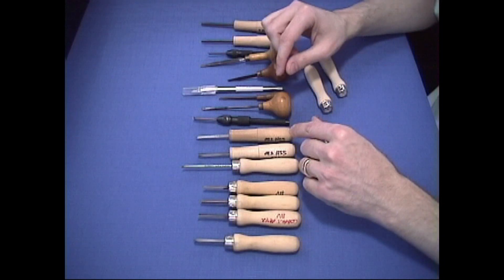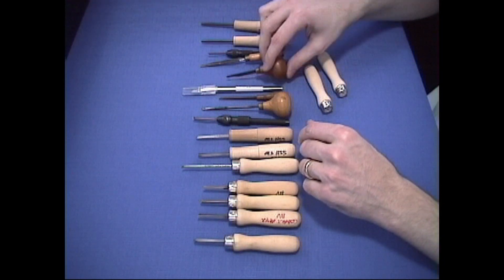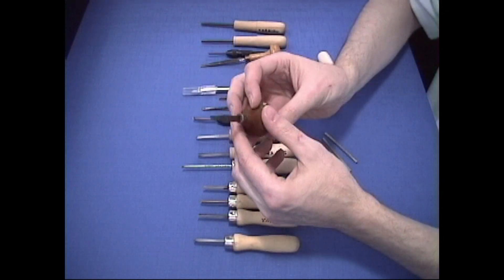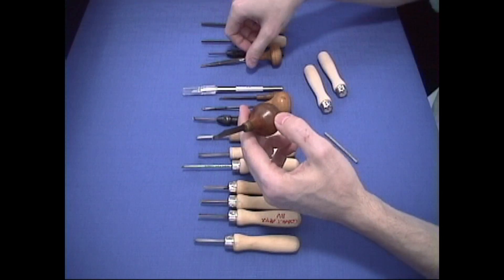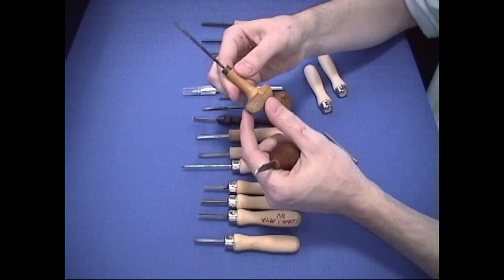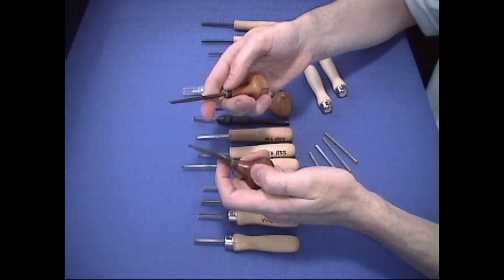Also, another thing about gravers is the type of handles that you use. They call these a mushroom graver handle because it reminds you of a mushroom. Some of them are mushroom shaped but they have a flat side in there. That's also because of the way you hold it in your hand.